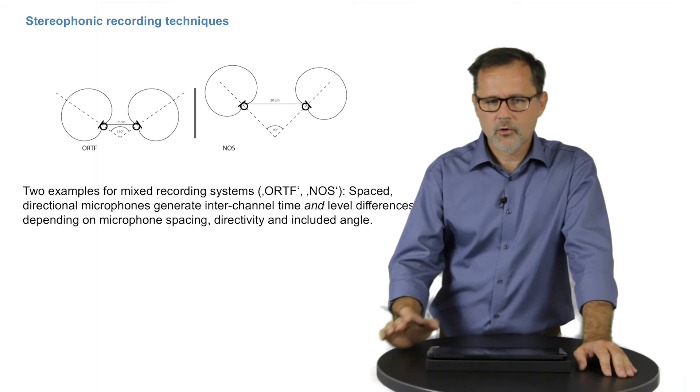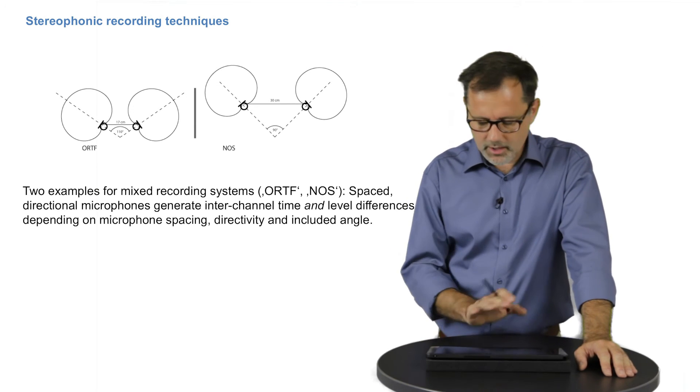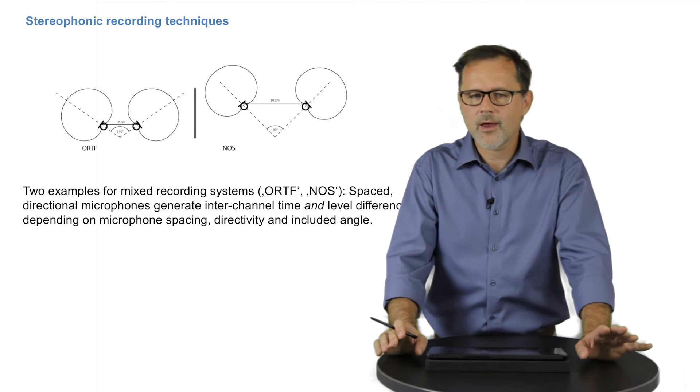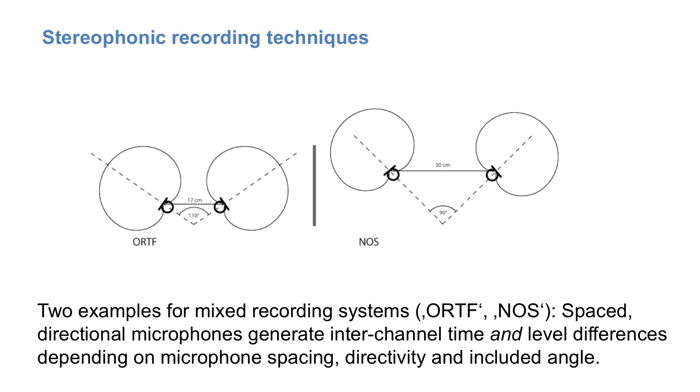Mixed recording systems, of which I show only two popular examples, produce interchannel time and level differences. And listening tests have shown that the position of the phantom source will just result from a linear combination of the time and level effect. And so the recording angles can be calculated accordingly.